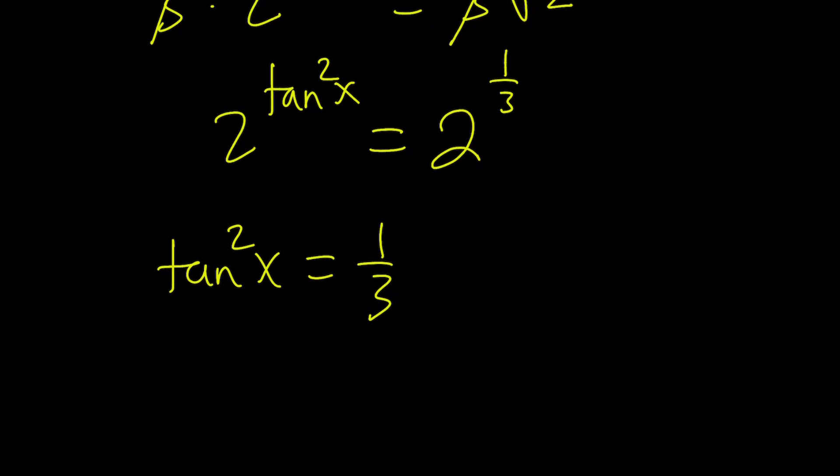How? Well, if tangent squared is 1 third, there are two results. Either tangent x is the square root of one third, which can be written as one over square root of three, or it is equal to negative one over square root of three. Awesome.